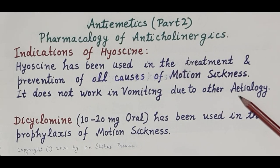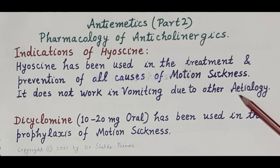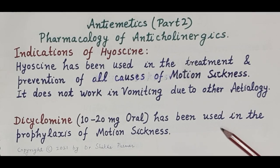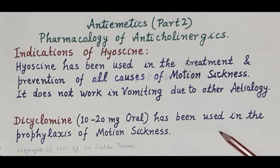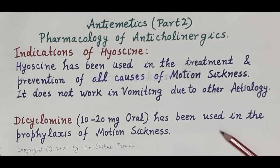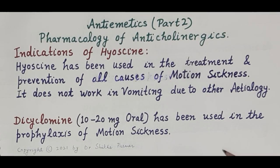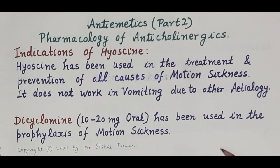Dicyclomine, another anticholinergic, given orally as a 10 to 20 milligram tablet, has been used in the prophylaxis of motion sickness. The mechanism of action of dicyclomine is the same as that of hyoscine. This concludes the pharmacology of anticholinergics as anti-emetics and the role of hyoscine in the prevention and treatment of motion sickness.